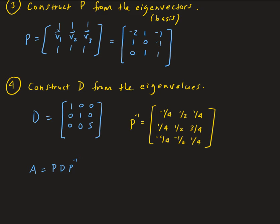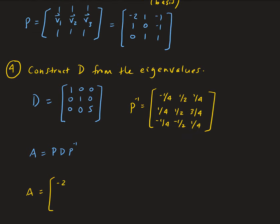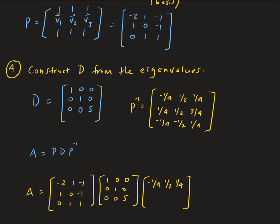In summary, A can be written as P times D times P inverse. If you multiply this all out, you get back the original matrix A. This is a nice factorization technique and can also be used to solve systems, though we won't cover that here. We now know P, D, and P inverse.